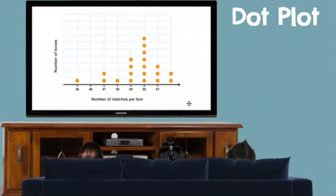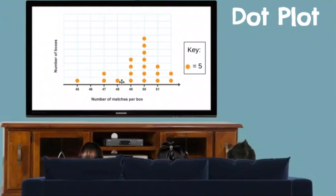Now this is something you may have seen before, possibly with a key. For example, if each dot represents five, then no longer is it one box with 45 matches — it becomes five boxes with 45 matches, ten boxes with 47 matches, five boxes with 48 matches, and so on. That's another way you may have seen a dot plot.